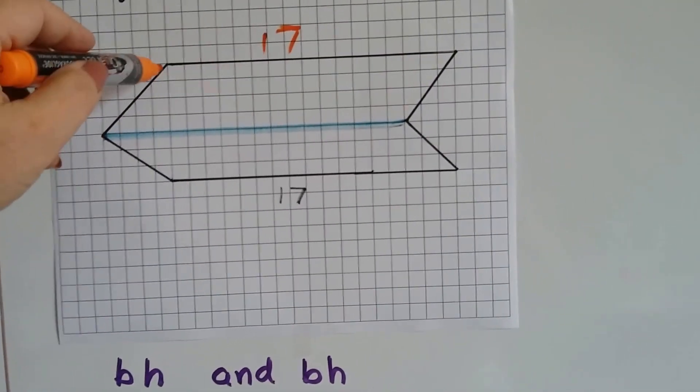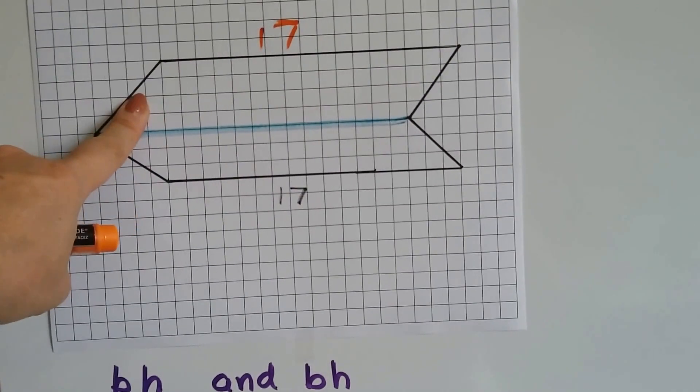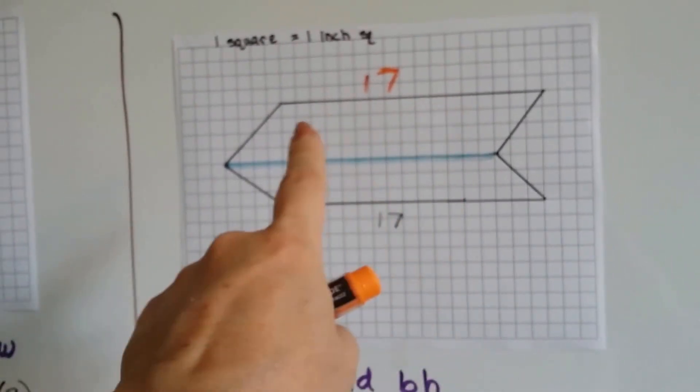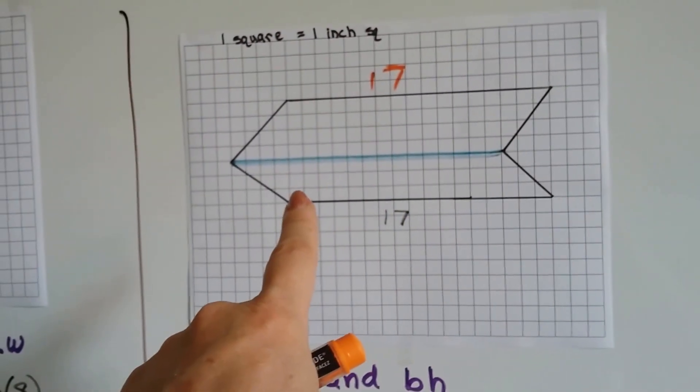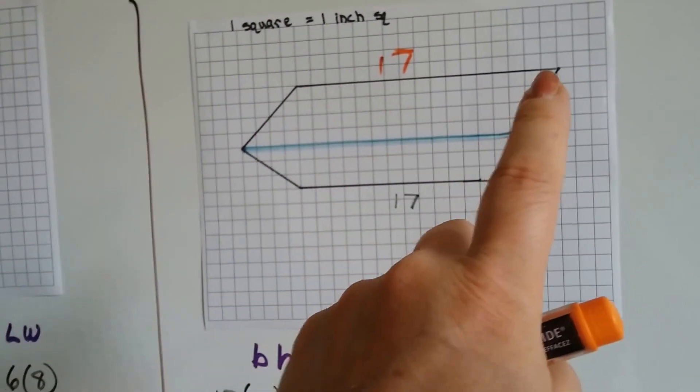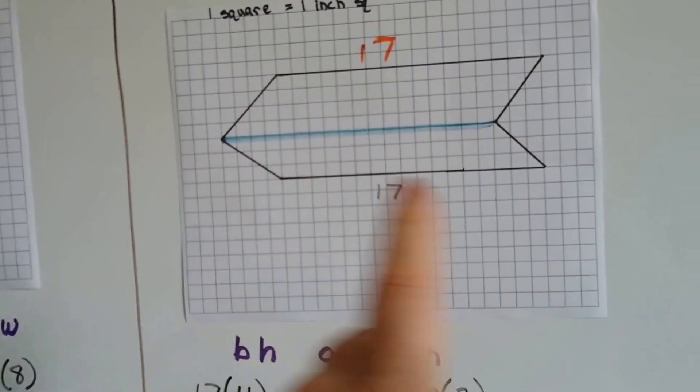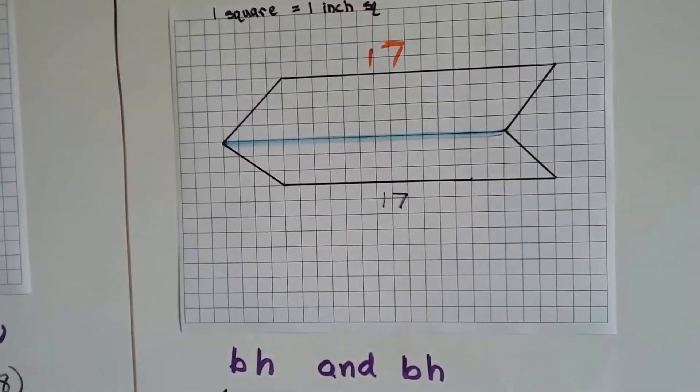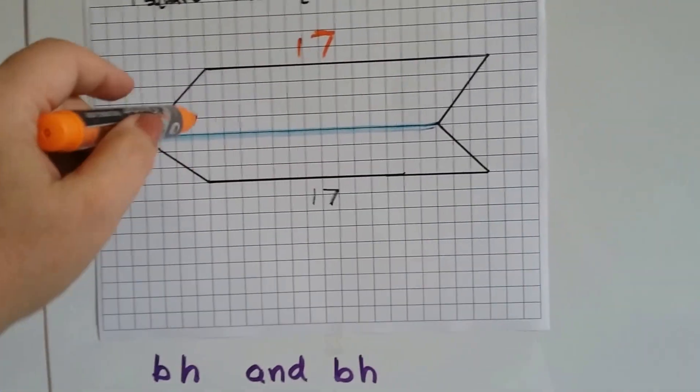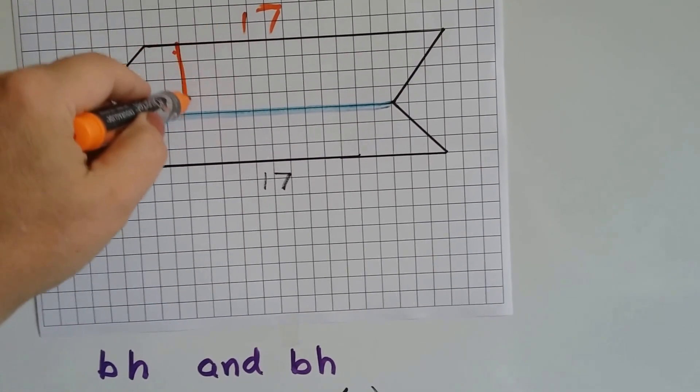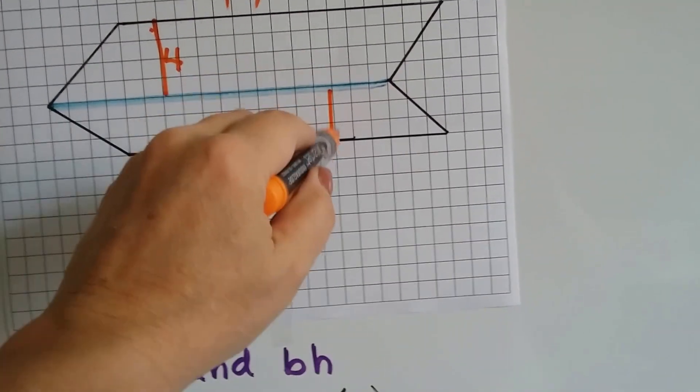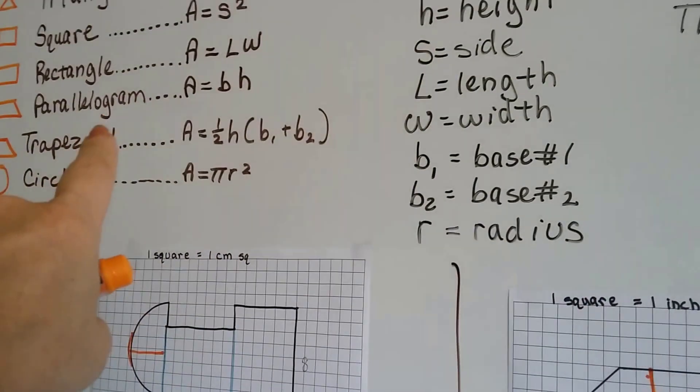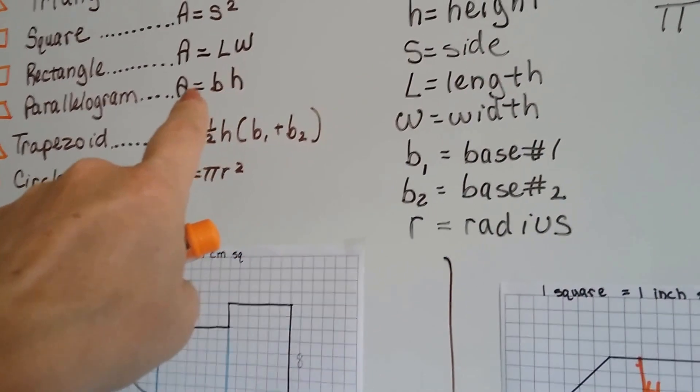Now, this one can be split into a triangle here and a triangle here. But what I see is a parallelogram on top of a parallelogram. So, instead of splitting this into rectangle, triangle, triangle, rectangle, triangle, triangle, and having to figure out all those measurements, I just see two parallelograms. The first parallelogram has a height of 4, and this one has a height of 3. And, for parallelograms, we do base times height.